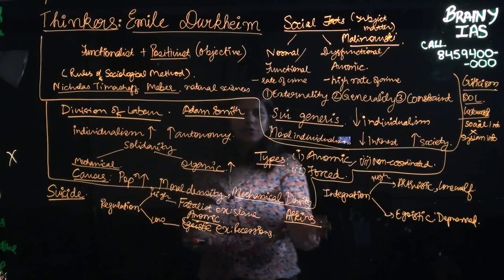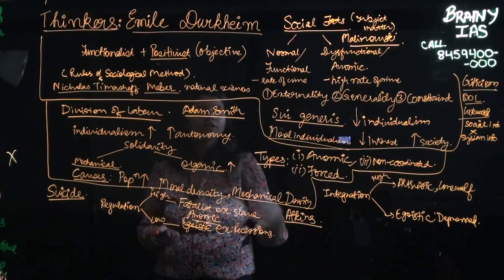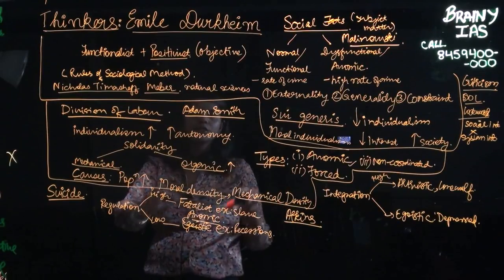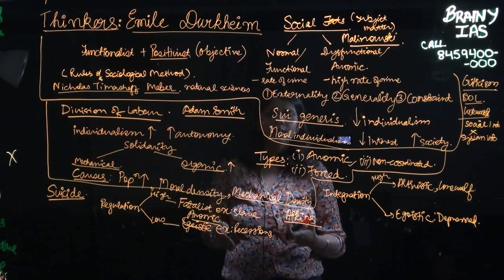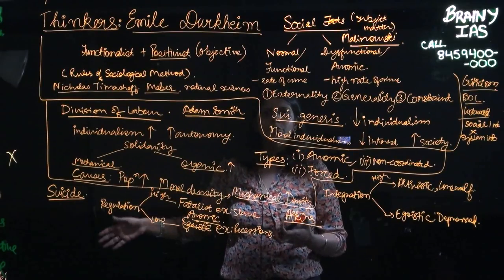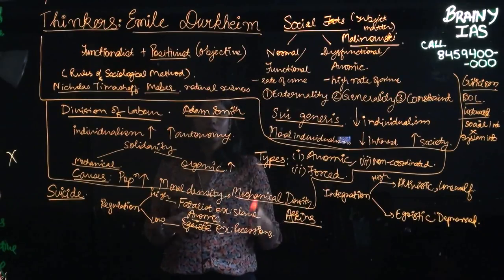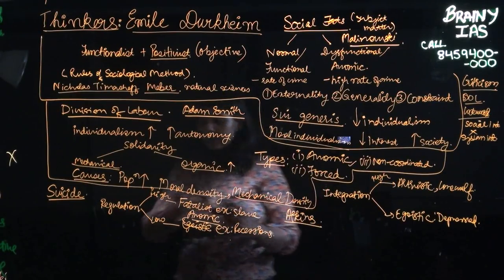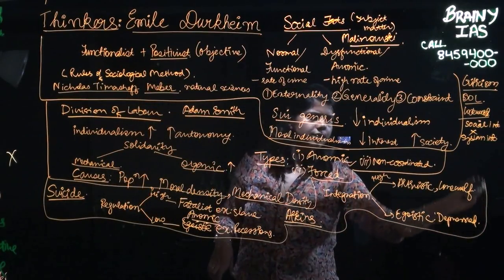Furthermore, this is criticized saying that suicide is not a social fact. It is an individual phenomenon. Someone might do it into his or her own personal conditions and not solely because of the society. So that basically forms one of the reasons why Durkheim faced strong criticism.